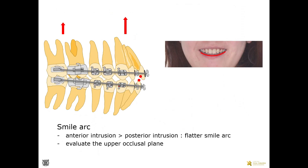If the amount of anterior intrusion is greater than posterior intrusion, the smile arc will become flatter. Upper occlusal plane angulation can be used to evaluate the smile arc.